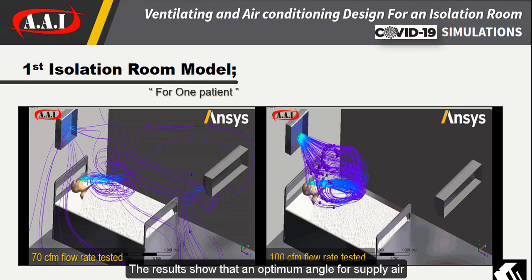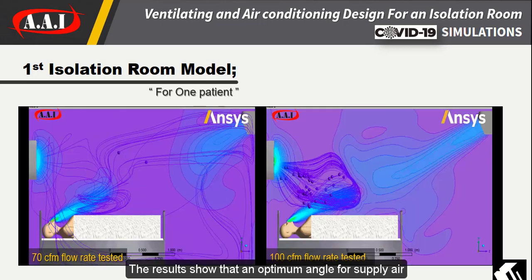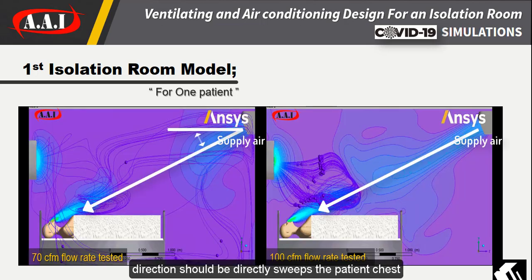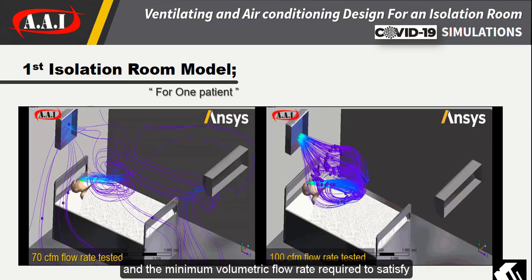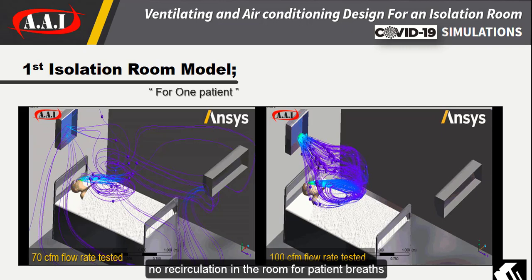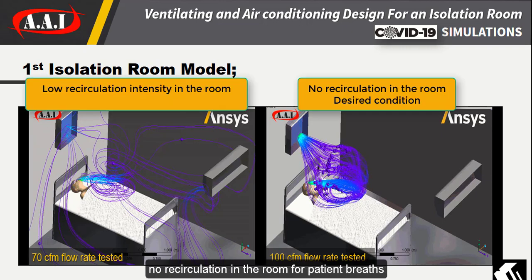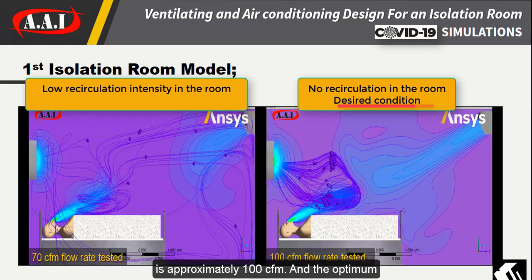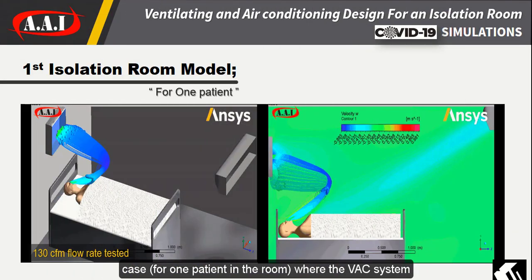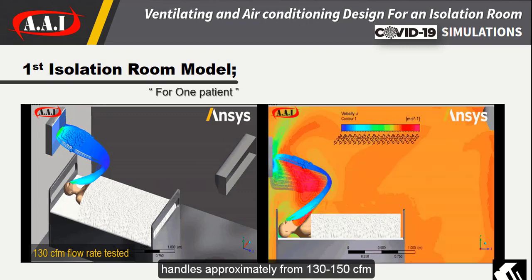The results show that an optimum angle for the supply air direction should directly sweep the patient's chest, and the minimum volumetric flow rate required to satisfy no recirculation in the room for patient breathing is approximately 100 CFM. The optimum case for one patient in the room is where the HVAC system handles approximately 130 to 150 CFM.